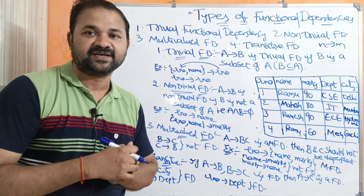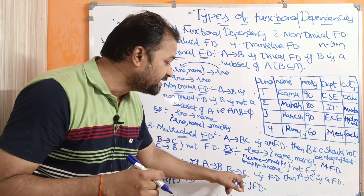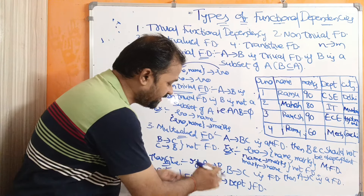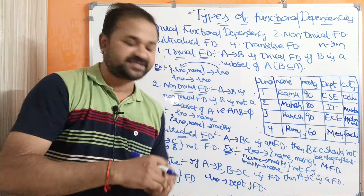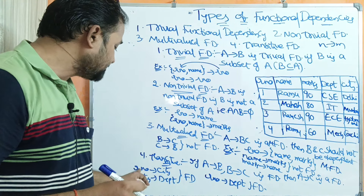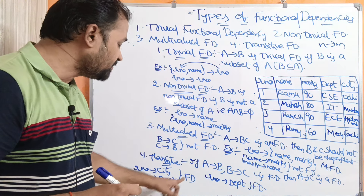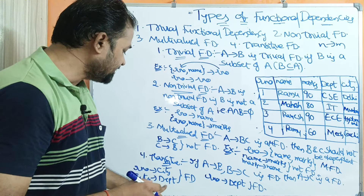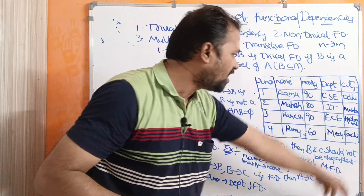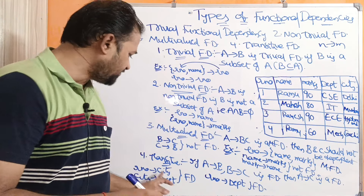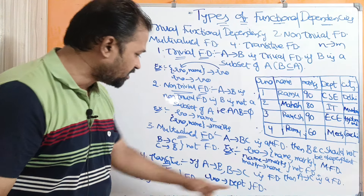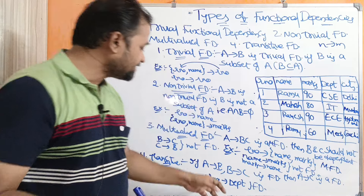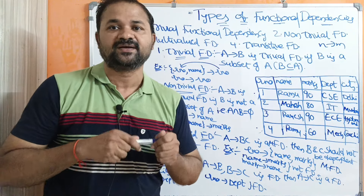The last one is transitive functional dependency. Transitive means if A → B and B → C are functional dependencies, then A → C is also a functional dependency. Let us take an example: roll number → city, and city → department are functional dependencies. Roll number values are all unique and different, so roll number → city is a functional dependency. City values — Delhi, Mumbai, Hyderabad, Kochi — are all different, so city → department is a functional dependency. Therefore, roll number → department is also a functional dependency. This is transitive functional dependency.